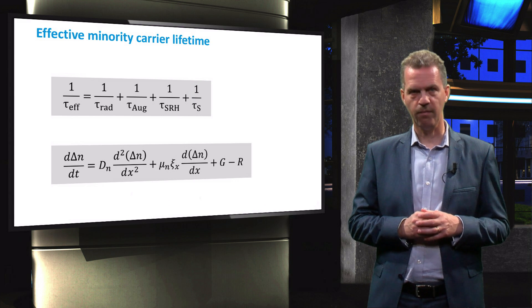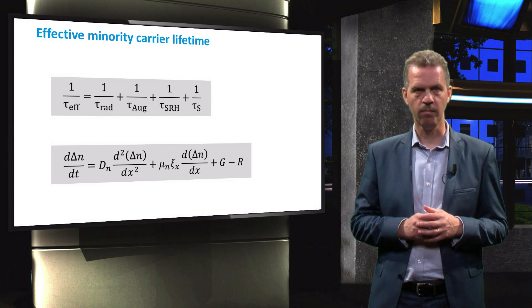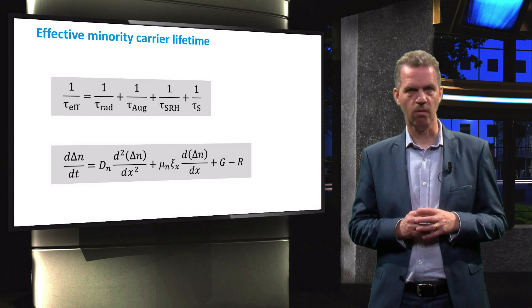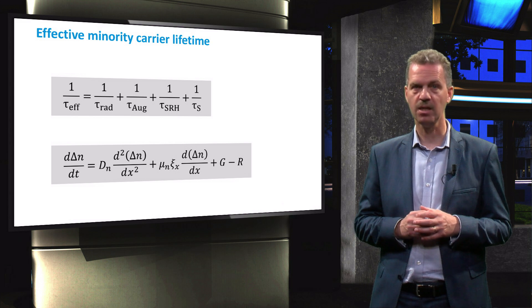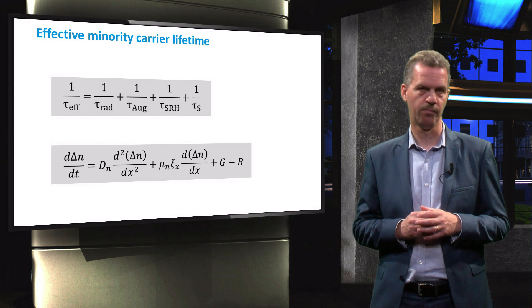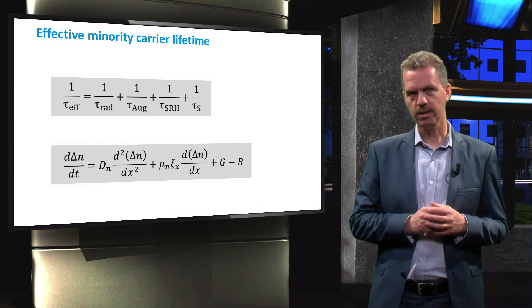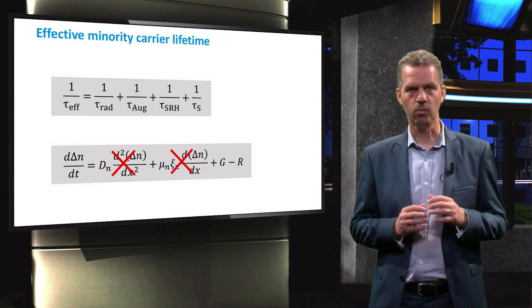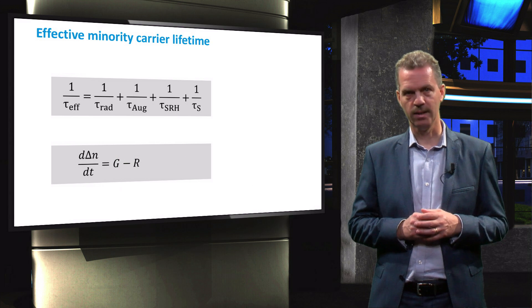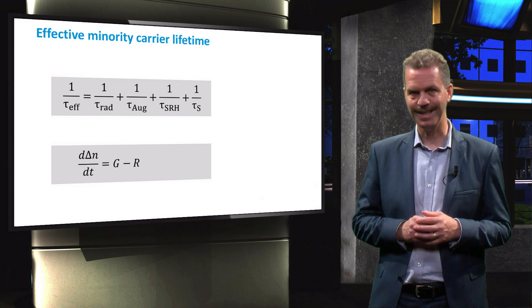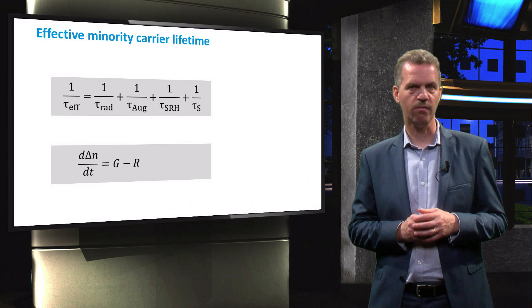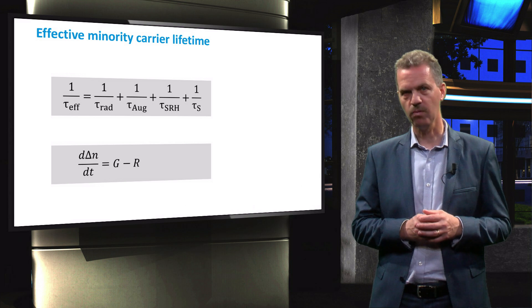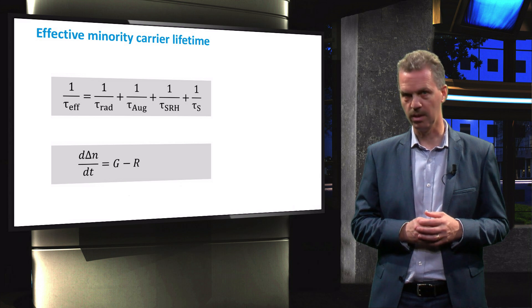When we want to quantify the effective minority carrier lifetime, we will look at the ambipolar transport equations, here shown for electrons being the minority carriers in a p-type crystalline silicon wafer. When the wafer is illuminated homogeneously and without an electric field present, the equation is reduced to this form, where dΔN over dt is the time derivative of the excess electron concentration, g is the carrier generation rate and r is the recombination rate.